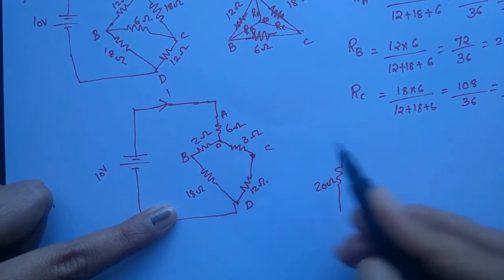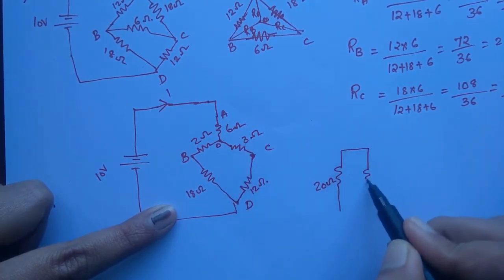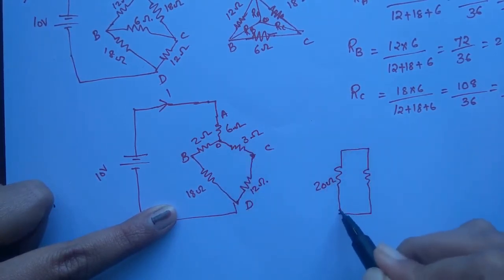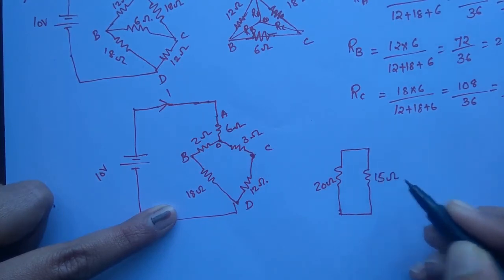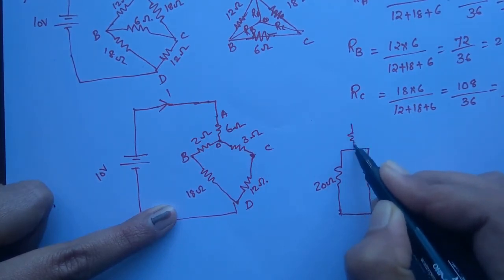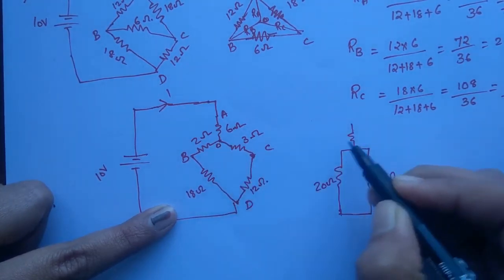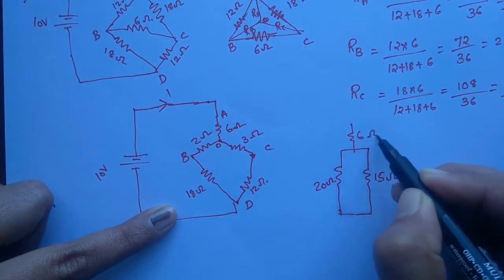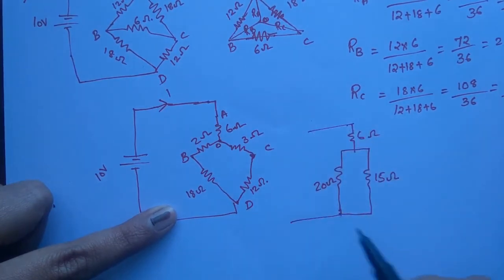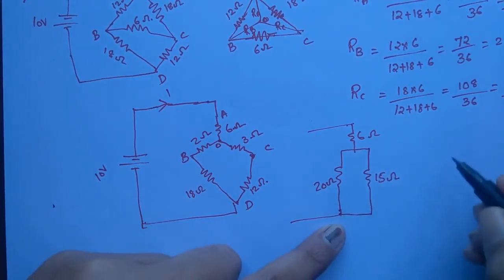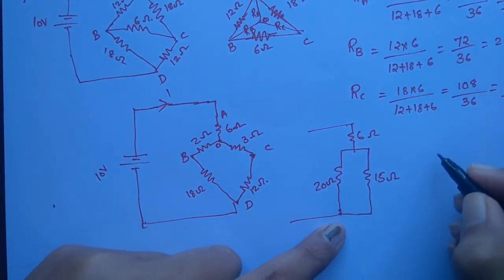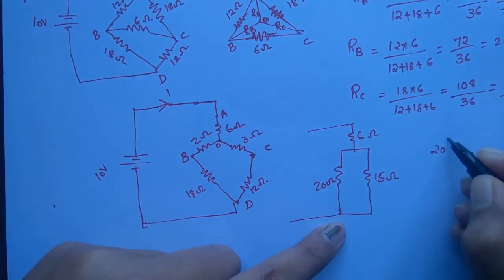12 ohm plus 3 ohm gives 15 ohm. That 15 ohm branch was in series with our 6 ohm. So now we have a total circuit with 20 ohm in parallel with 15 ohm, that result being in series with 6 ohm.